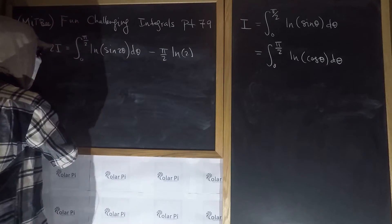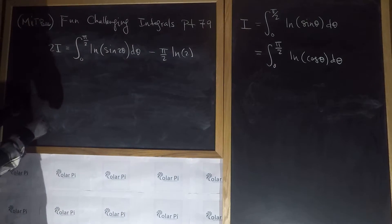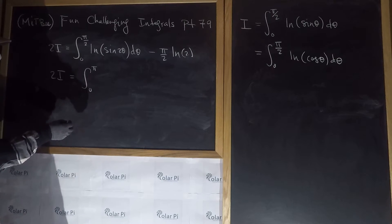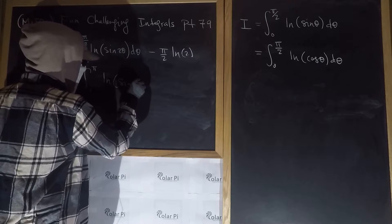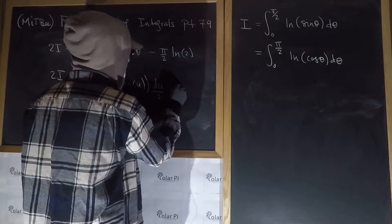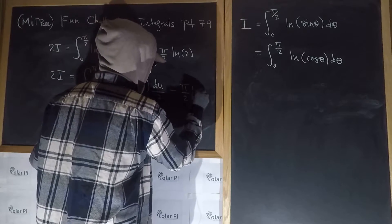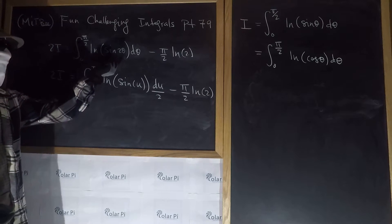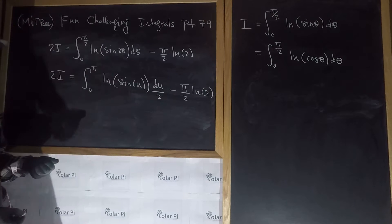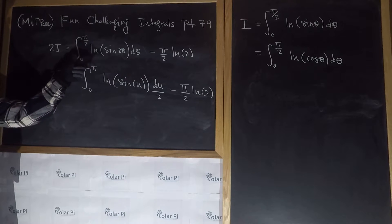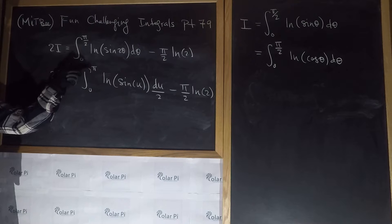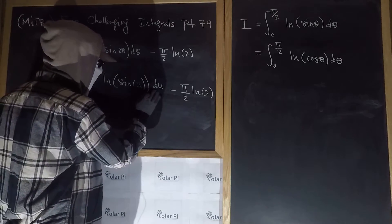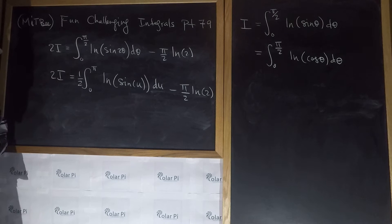Next, using the u-substitution u = 2θ, the integral from zero to π/2 of ln(sine(2θ)) dθ transforms to the integral from zero to π of ln(sine u) du over 2. So 2I equals (1/2) times the integral from zero to π of ln(sine u) du, minus π/2 · ln(2).